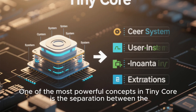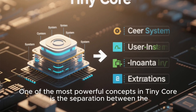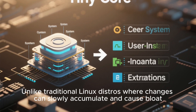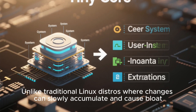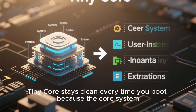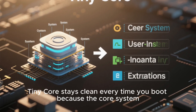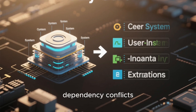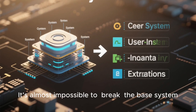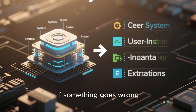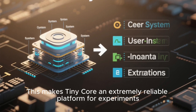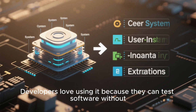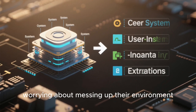One of the most powerful concepts in Tiny Core is the separation between the base system and user-installed extensions. Unlike traditional Linux distros where changes can slowly accumulate and cause bloat, Tiny Core stays clean every time you boot because the core system is read-only in RAM. This reduces the chances of corruption, dependency conflicts, or unstable updates — it's almost impossible to break the base system. If something goes wrong, you reboot and everything resets. This makes Tiny Core an extremely reliable platform for experiments, and developers love using it because they can test software without worrying about messing up their environment.